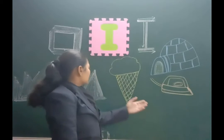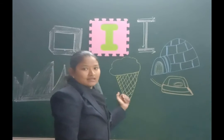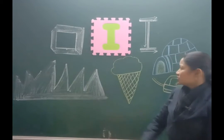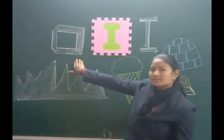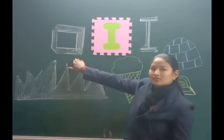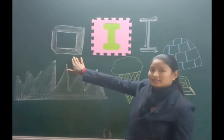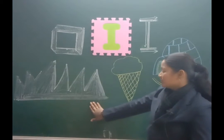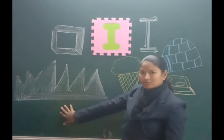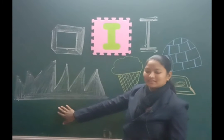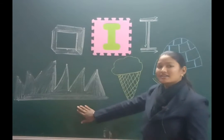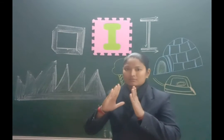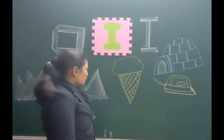Now you can see some objects. Can you name them? Let's learn. This one — it is eyes. Then this one. It looks like a mountain, right? But not a mountain. What is it? It's iceberg — a mountain created from ice.